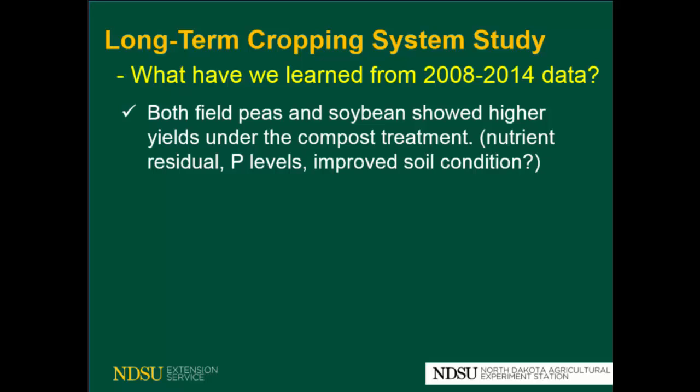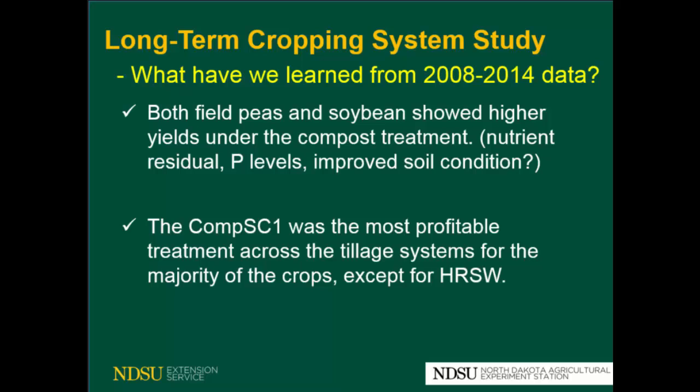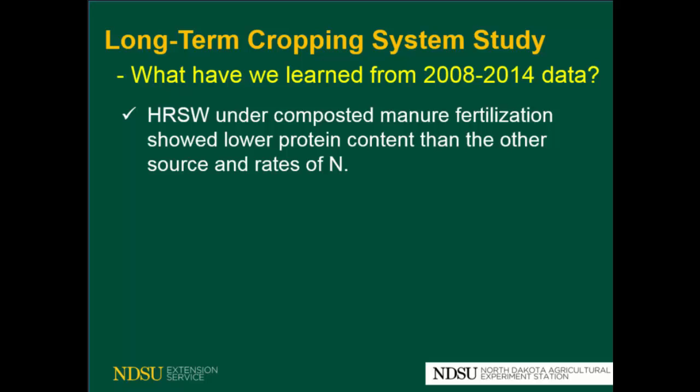It could be micronutrients present in the compost, high phosphorus levels, or improved soil environment — maybe an interaction of all that. The compost treatment under scenario one was the most profitable treatment across the tillage systems for the majority of crops, except for spring wheat. Spring wheat under compost manure fertilization showed lower protein content than the other nitrogen sources, which has a huge impact on income from spring wheat.